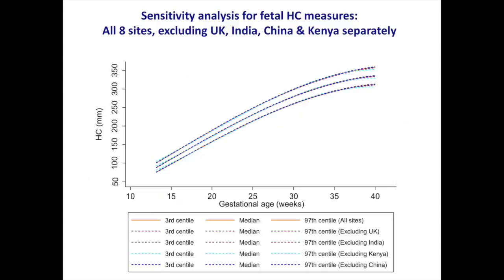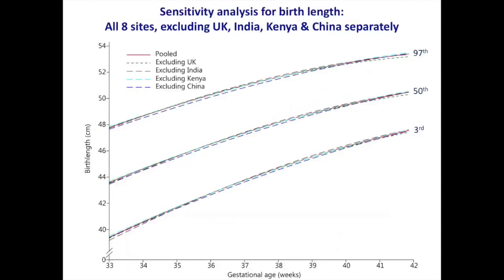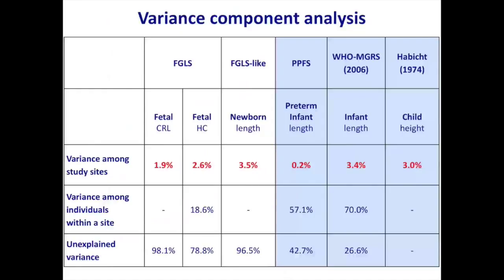When we look at babies at birth, we found that the lengths of the babies were also almost identical — the centile thresholds across the sites — and excluding each of the low- and middle-income countries really made no difference at all. When we think about how much of the variance is due to being born in different countries, we can perform a variance component analysis.